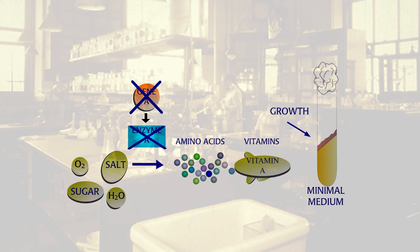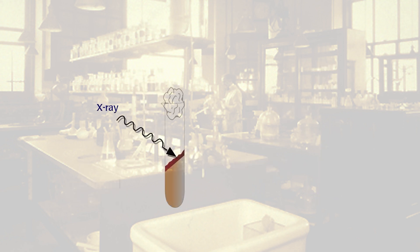Both set out to find these nutritional mutants. In 1927, Herman Muller showed that X-rays cause mutations in genes. So they irradiated a Neurospora culture with X-rays. They expected to get some rare mutants that would not grow on minimal medium.